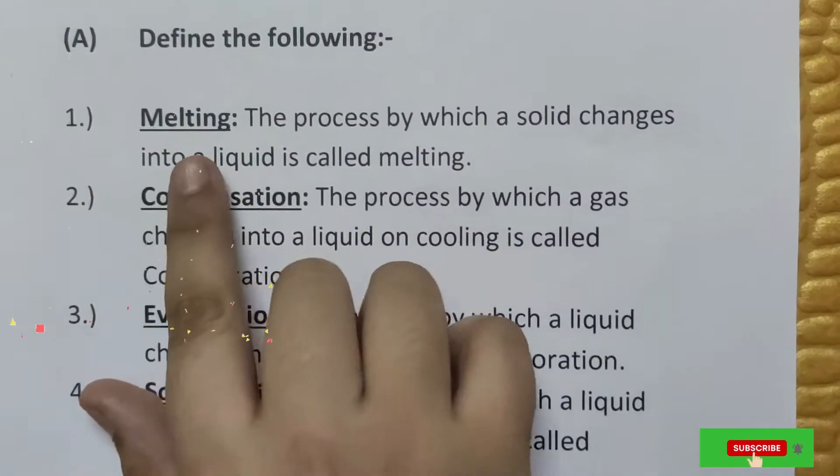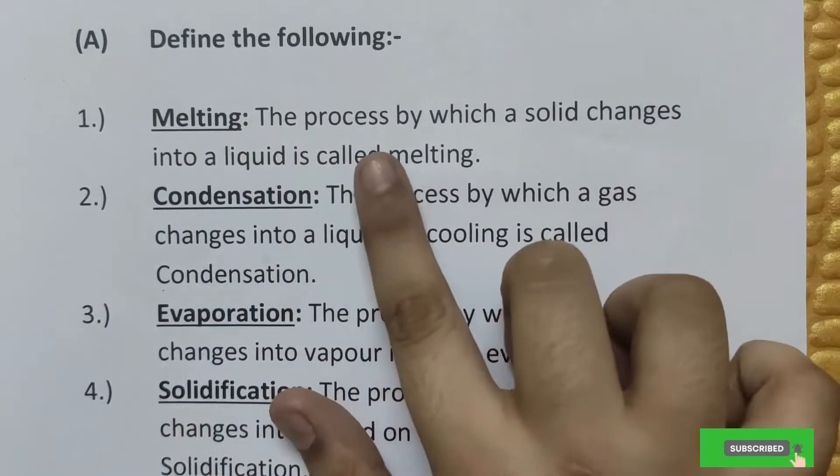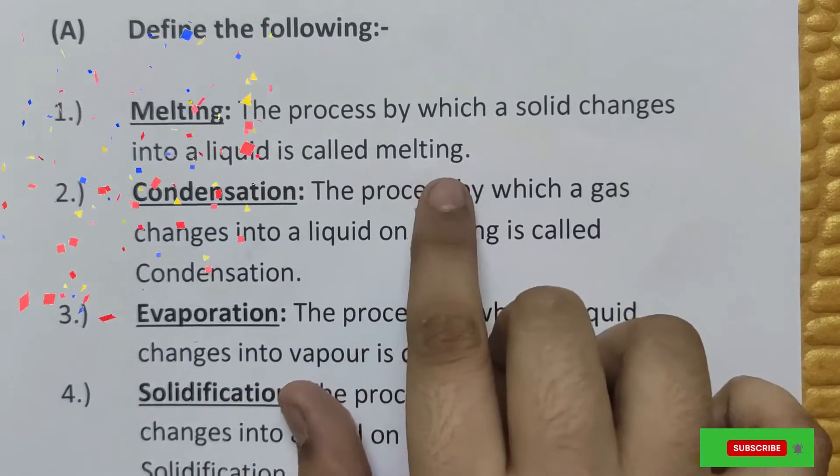Define the following. First, melting. The process by which a solid changes into a liquid is called melting.